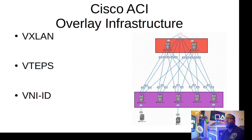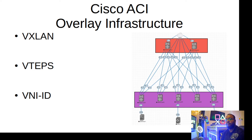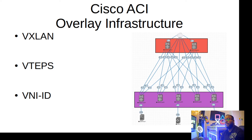Instead of thinking of ACI as 'software-defined networking,' I like to think of it as a front end to VXLAN — because that's essentially what it is. VXLAN stands for Virtual Extensible Local Area Network. One of its primary use cases is to overcome the limitations of regular VLANs, which are 12-bit. VXLAN is 24-bit, so you can have over 16.7 million VXLANs or VNIs.